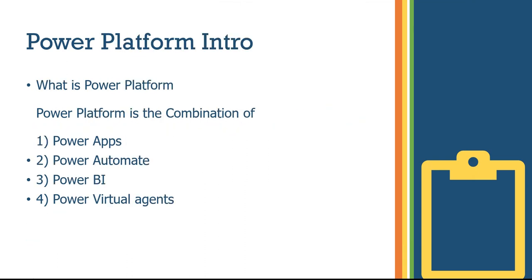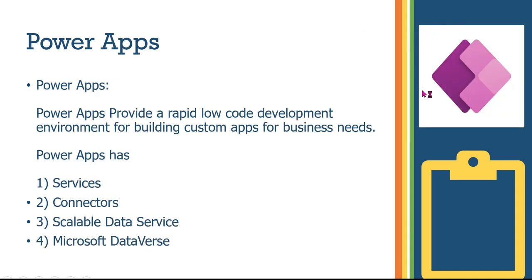The first component is Power Apps. You can identify it by its violet or purple color logo. Power Apps provides a rapid low-code development environment for building custom apps for business needs. When I say low-code, it means you need very little coding — just drag and drop features to build your application.